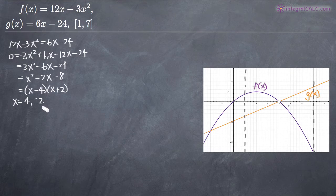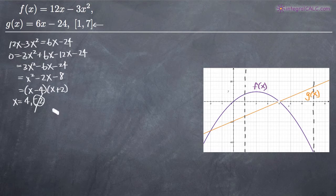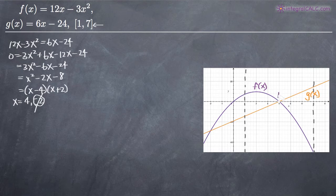Luckily for us, we only have to concern ourselves with one point, because x = −2 is outside our range of 1 to 7, so we can ignore it. x = 4 is the only intersection point we care about, and we've confirmed that the intersection is indeed at x = 4 as we saw on the graph.